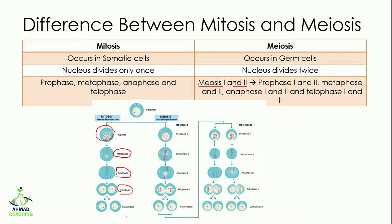In mitosis, the cell enters prophase, then metaphase, then anaphase, then telophase, then cytokinesis, and we get two cells. In meiosis, the cell first enters meiosis 1, which is very important because of the process of crossing over. Due to crossing over, the next generation is going to be different from the parental generation.